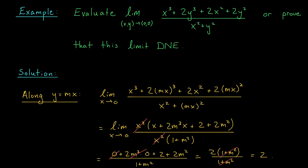Our function appears to be approaching a value of 2 along every single straight line through the origin. We haven't checked along the y-axis yet, but I'll let you check that as an exercise — you should get a value of 2. At this point, we have pretty strong evidence that the limit may exist, and our candidate limit is 2. You can try checking along parabolas or cubics, and I think you'll find the function still approaches 2. So at this point, I'm going to jump into a proof using the squeeze theorem that our limit exists and is equal to 2.